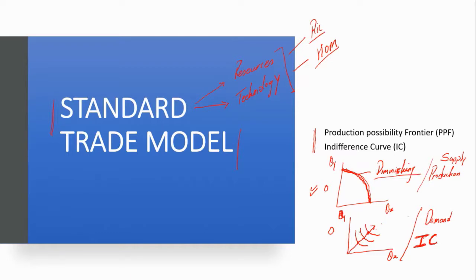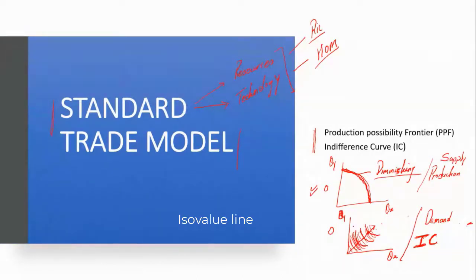There are not just three indifference curves — there's a map, an infinite number of indifference curves. Whenever we have a price line, which in your textbook is referred to as the ISO value line, once you have the prices, you try to get to the highest indifference curve — wherever it is tangent to the highest indifference curve. This is also sometimes referred to as the consumption possibility frontier, because it tells you the maximum of the two goods that you can consume.